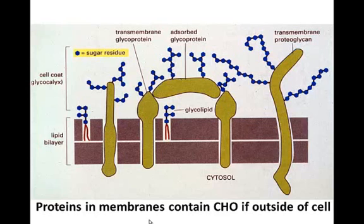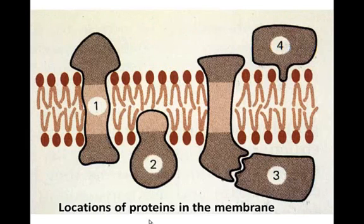Proteins in membranes contain carbohydrates if they're located on the outside of the cell. This could be peripheral proteins, transmembrane proteins, or outside integral proteins. Different proteins exposed to the outside will have already been within the Golgi apparatus where sugars are added, so they will have sugars associated with them.